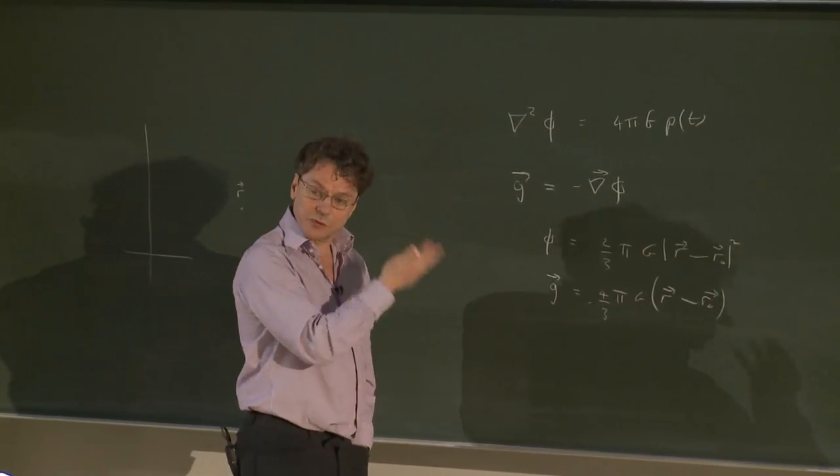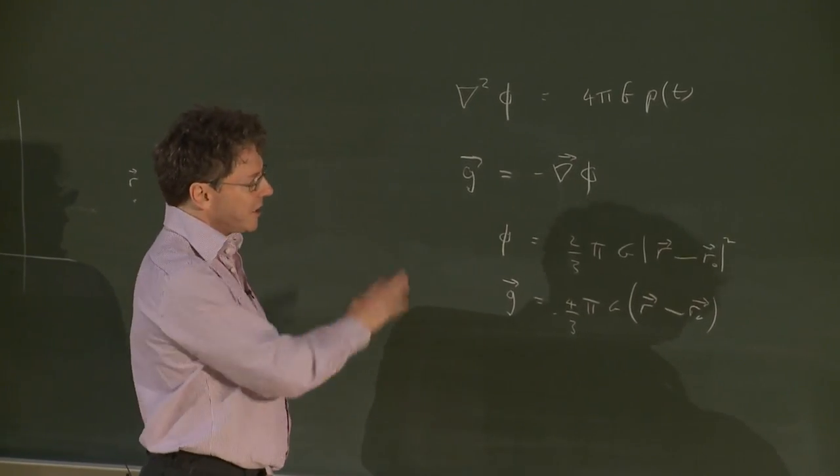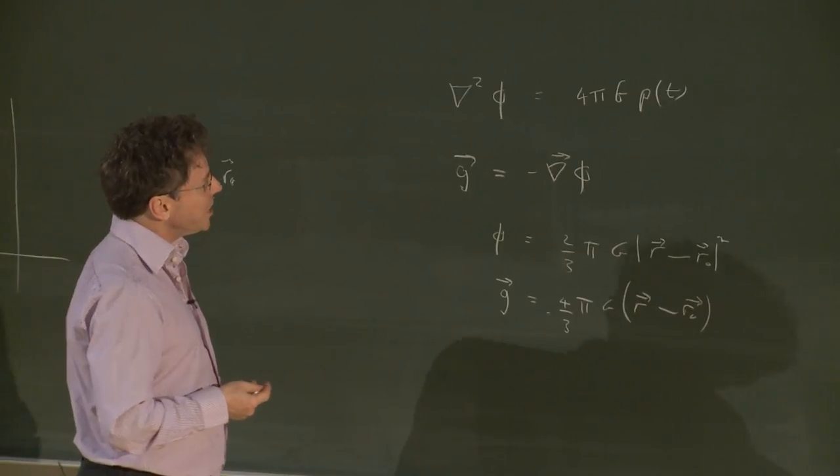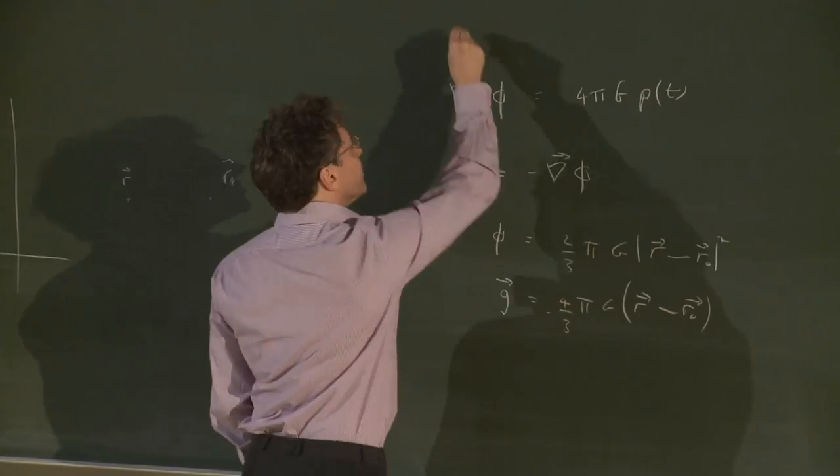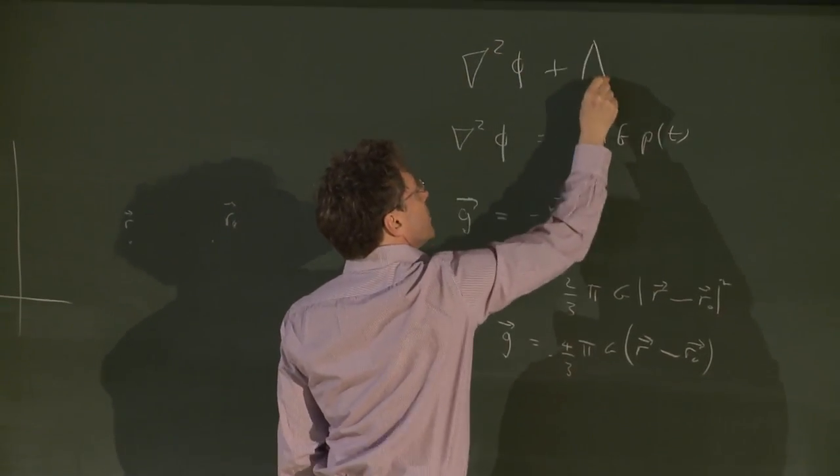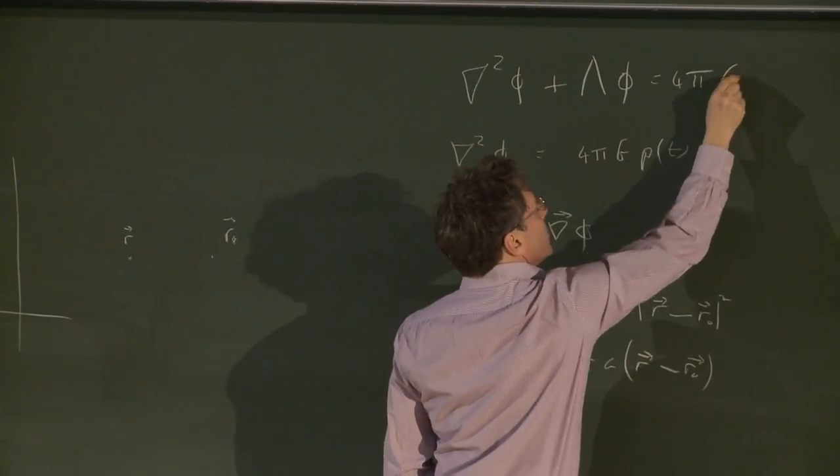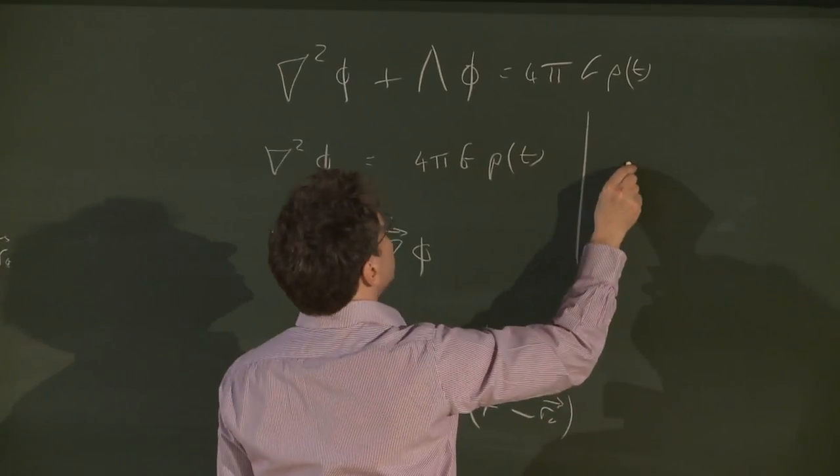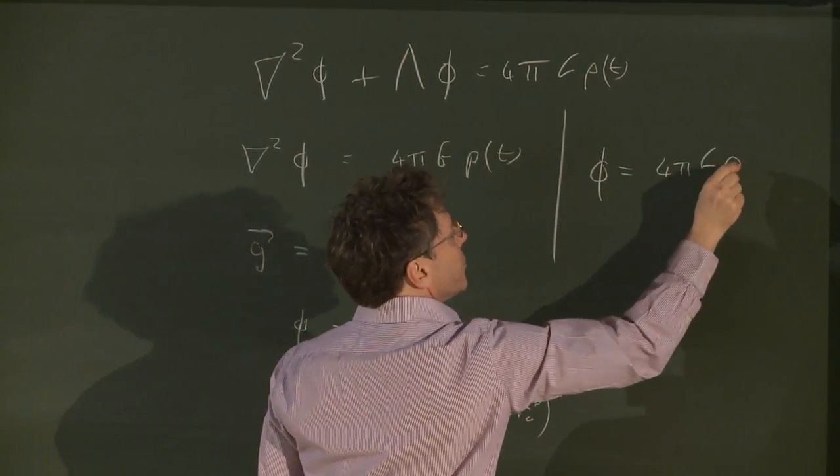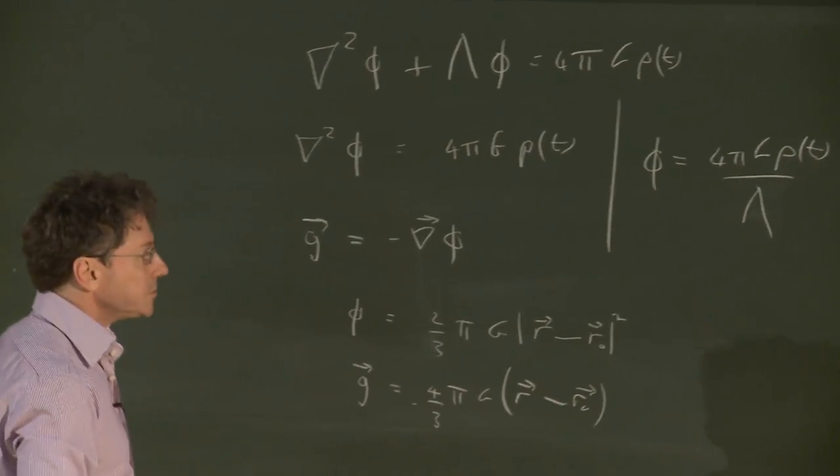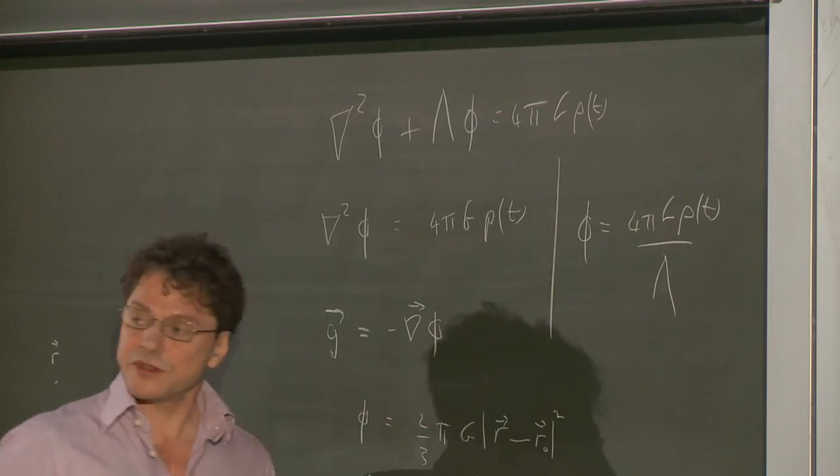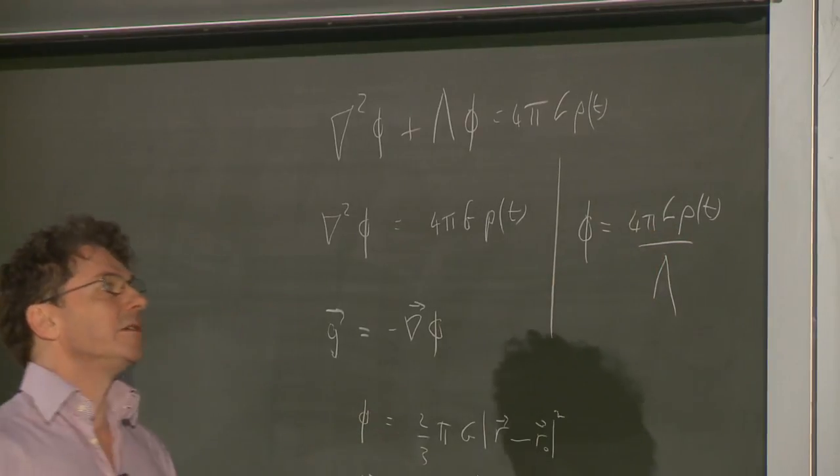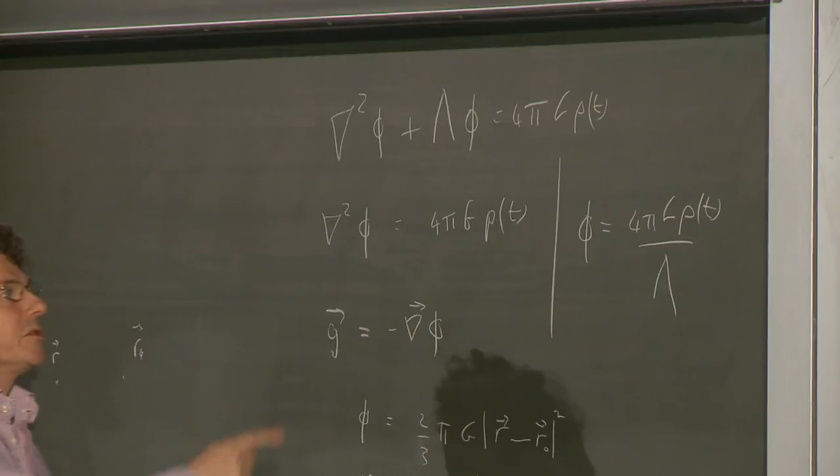So Einstein, involved with his own concerns for a static universe and how to solve field equations for gravity, in his case, the field equations for general relativity, noticed that one way of solving this problem is if we modify this equation as follows. And then it's rather easy to see that there is a static solution, namely phi equals four pi g rho over lambda. It's clear that the solution only exists when lambda is non-zero. And if rho is now constant in time and in space, then the Laplacian acting on this just gives zero and this equation is satisfied.